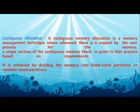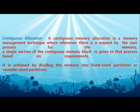Continuous allocation is one of the memory management techniques where, whenever there is a request by a user process for memory, a single section of a continuous memory block is given to that process based on its requirements. The space is allocated continuously, not scattered. When a file requests a certain size, it continuously allocates blocks — one, two, three, four, five — like that.